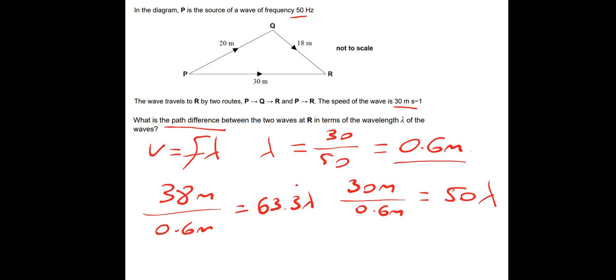So the path difference is the difference between. So we've got 63 and a third minus the 50. And 63 and a third minus 50 leaves us with a path difference of 13.3 recurring wavelengths. Hopefully you've figured that one out.